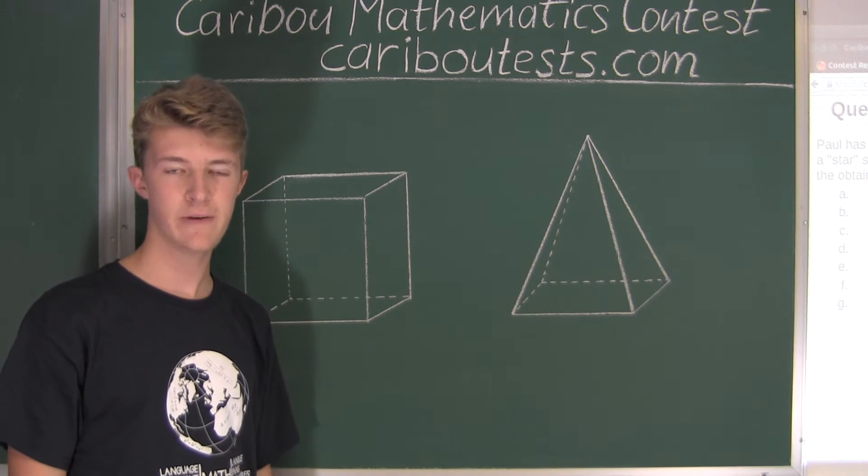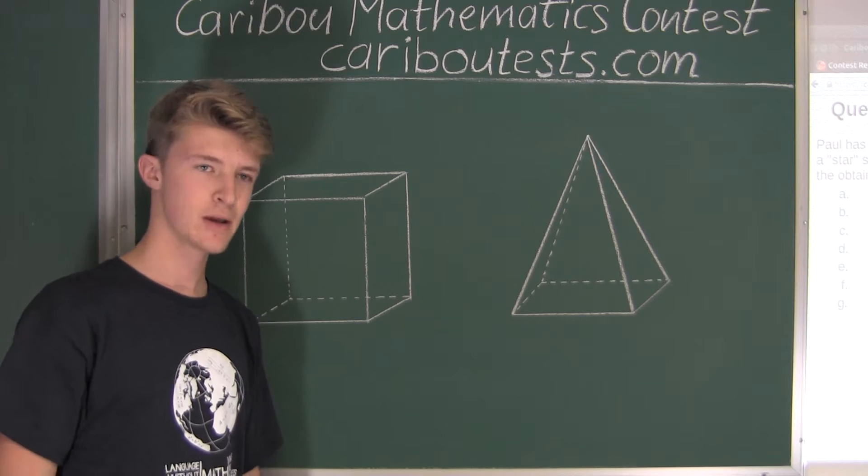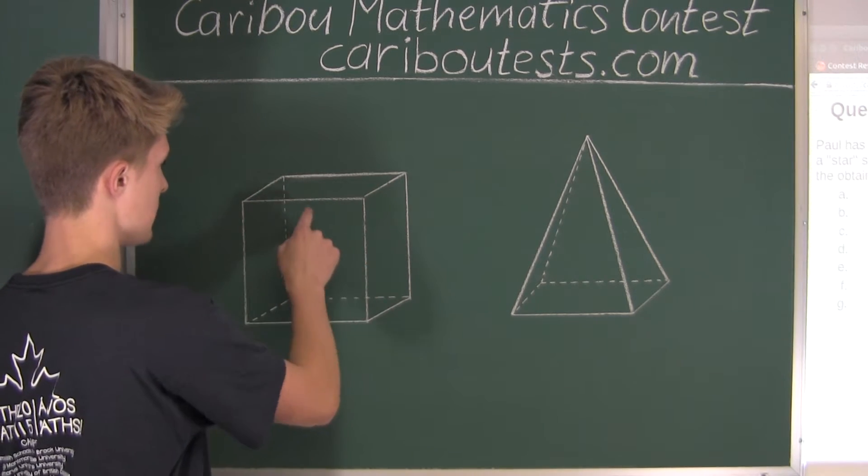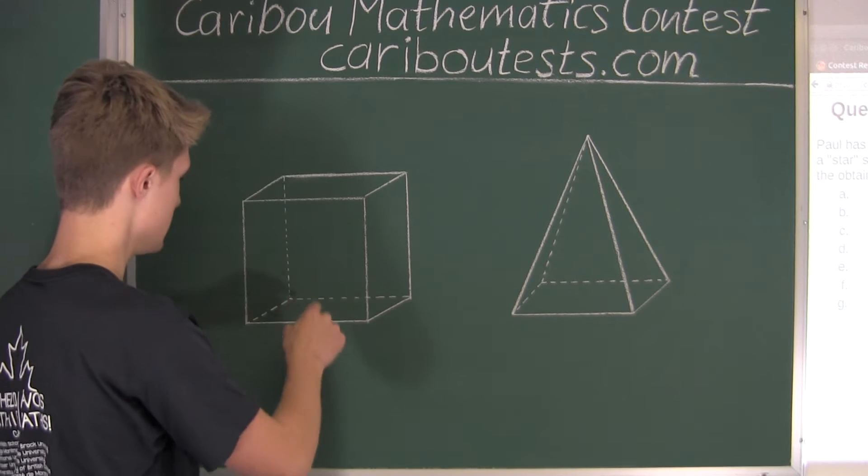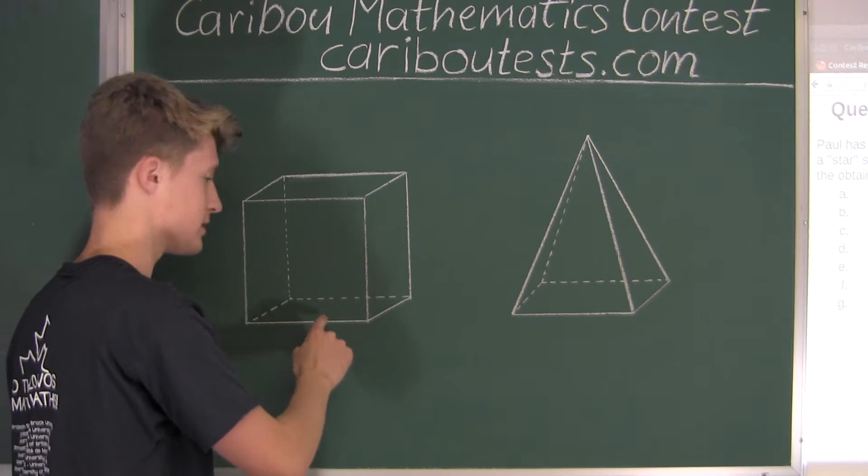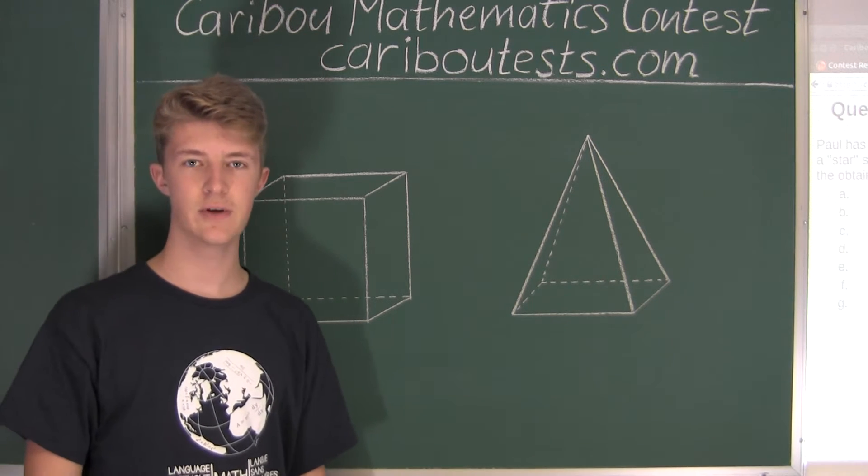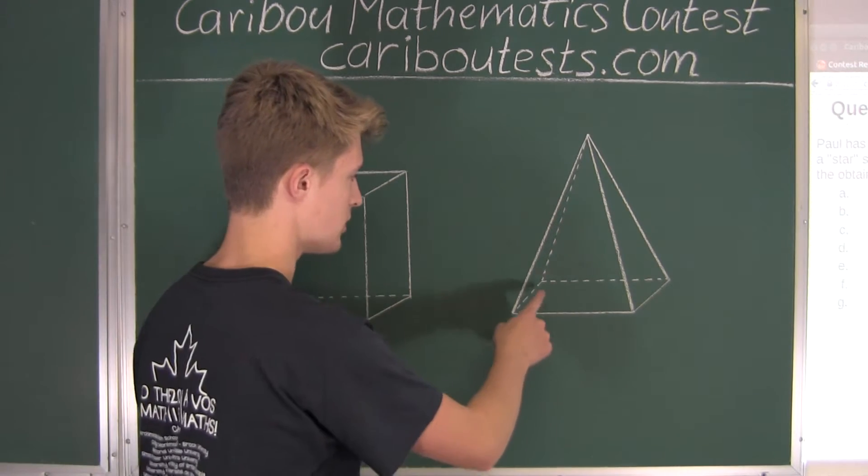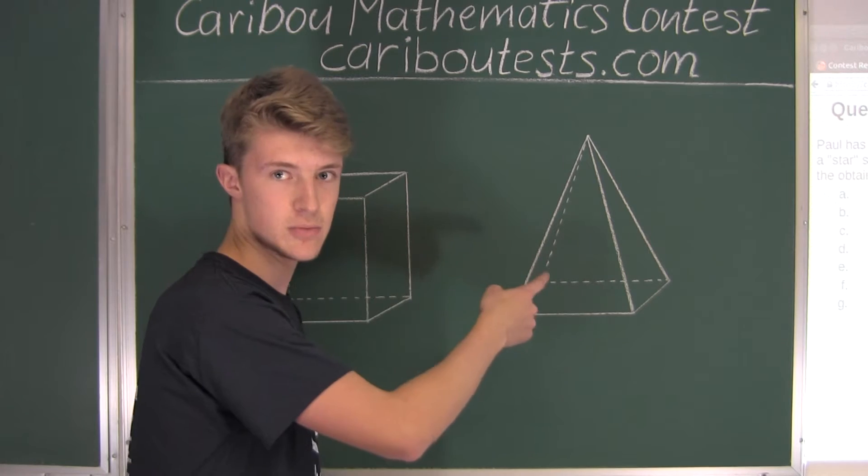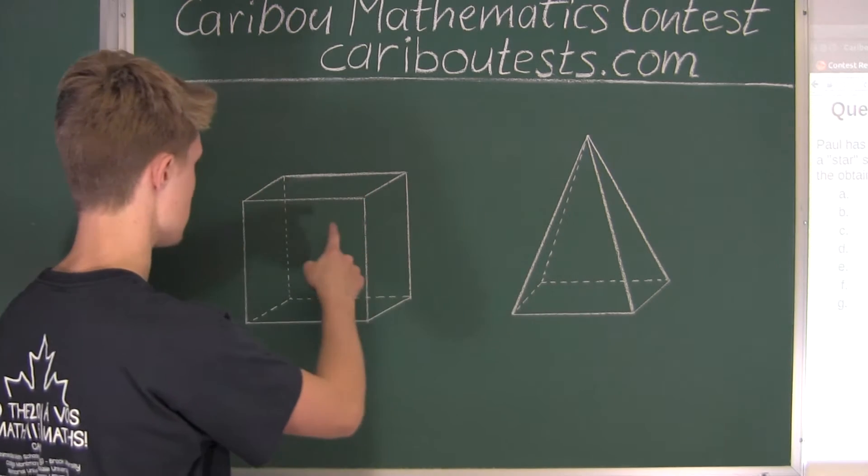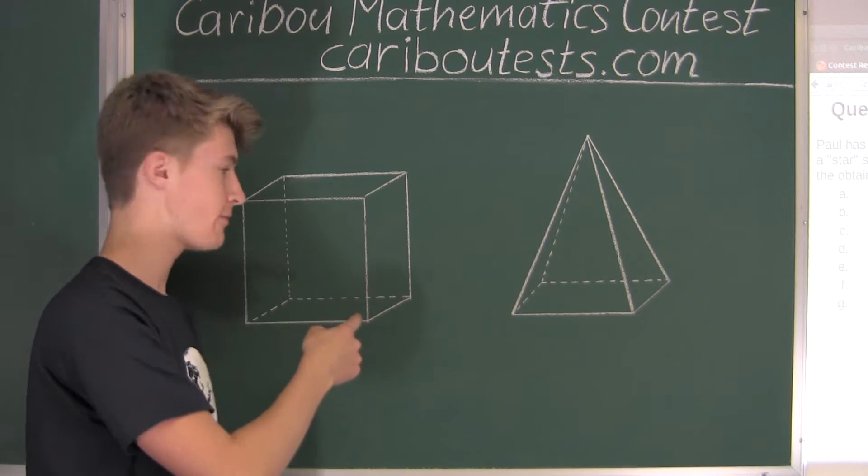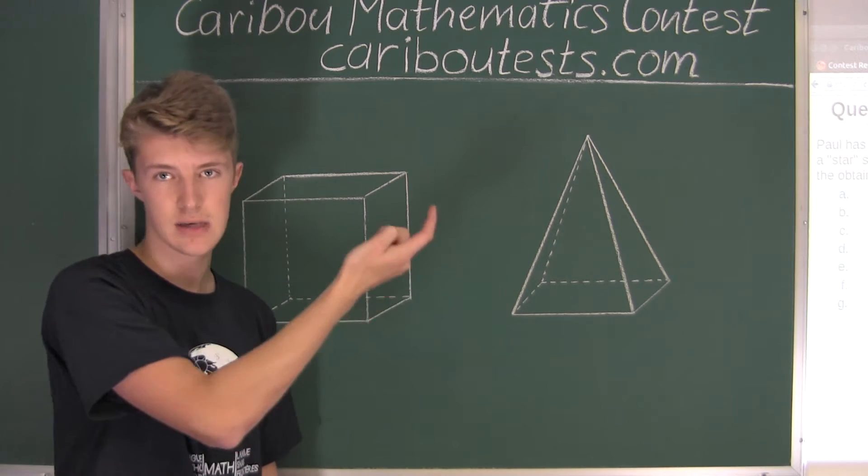Now we need to know how many faces are on a cube. We have four going on the sides, then we have one on the top is five, and one on the bottom is six. So we have six faces on a cube. If we know that for one pyramid, the base must fit exactly on one of the faces, that means if we have six faces, we must have six pyramids.